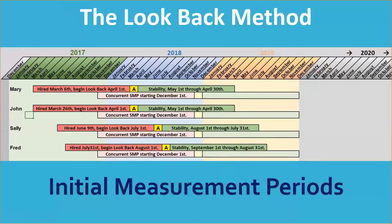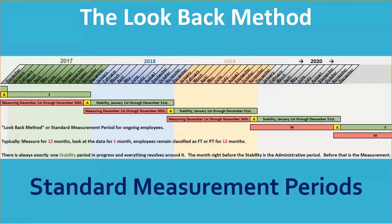If you're not sure, the IRS has rules called the Look Back Method, and you can measure for up to 12 months and take a 13th month to look at the results and decide. Here we can see measuring in red for each new employee starting the month after their hire date, then an administrative month after 12 measurement months in yellow, then a stability phase in green. You might also notice the pink bars underneath where eventually everyone gets rolled into a common measurement cycle — that's called the standard measurement period.